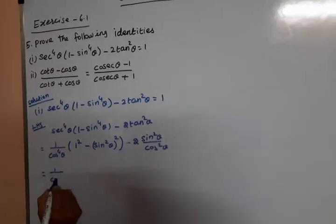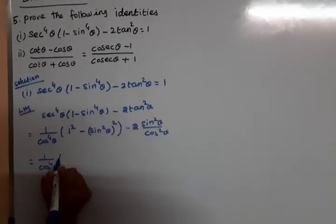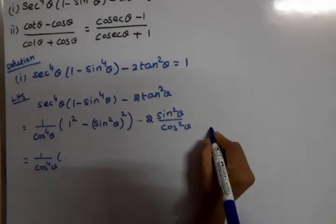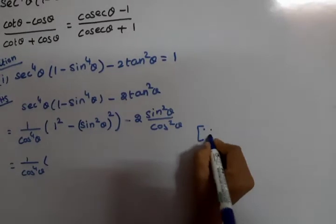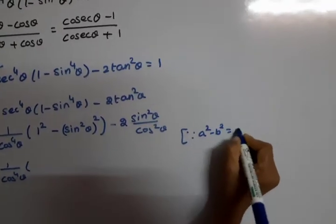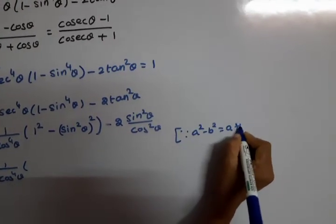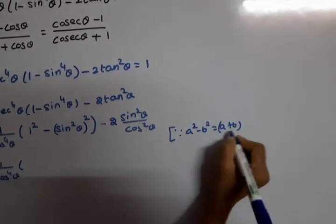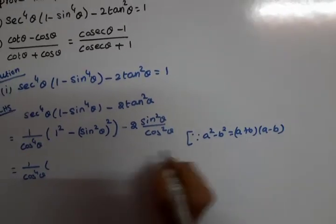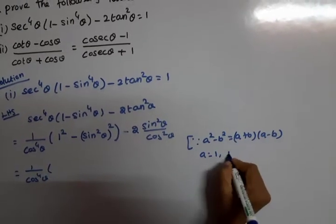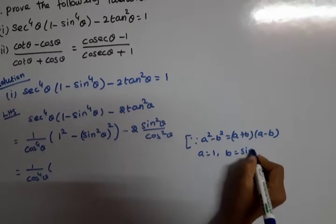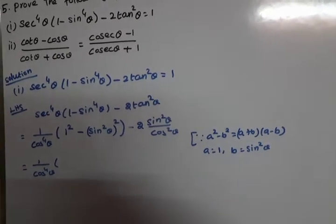So we have 1 divided by cos⁴θ, and (1 minus sin⁴θ) is a² minus b². We use the formula a² minus b² equals (a plus b) into (a minus b). Here a equals 1 and b equals sin²θ.